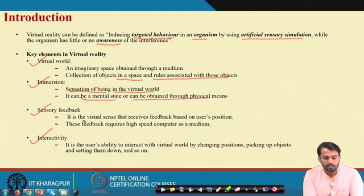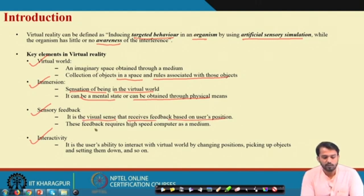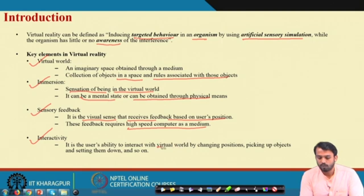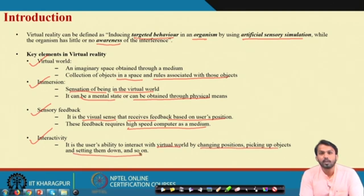Sensory feedback is the visual sense that receives feedback based on the user's position, and this feedback requires a high-speed computer as a medium — a computer having a high-end graphics card and high-speed RAM. Finally, interactivity is the user's ability to interact with the virtual world by changing position, picking up objects, and setting them down. For interactivity, hand tracking devices and certain sensors are used so that user interaction with the created virtual world is possible.